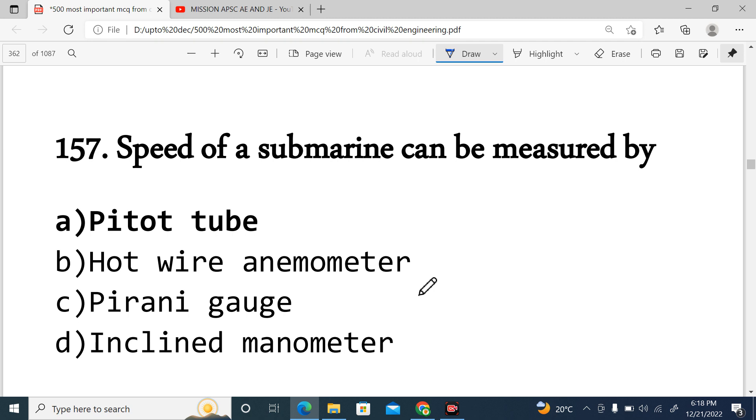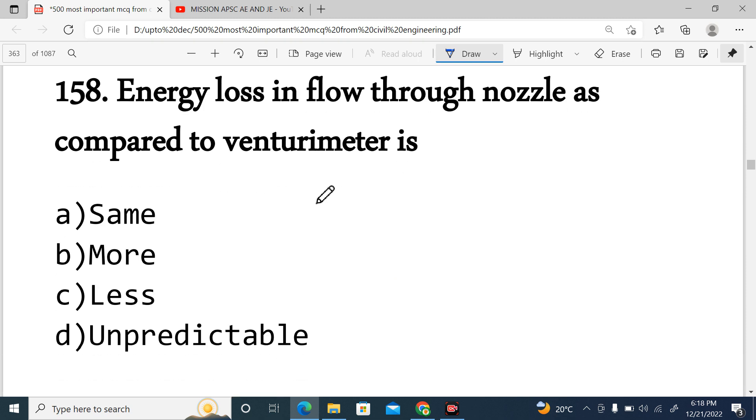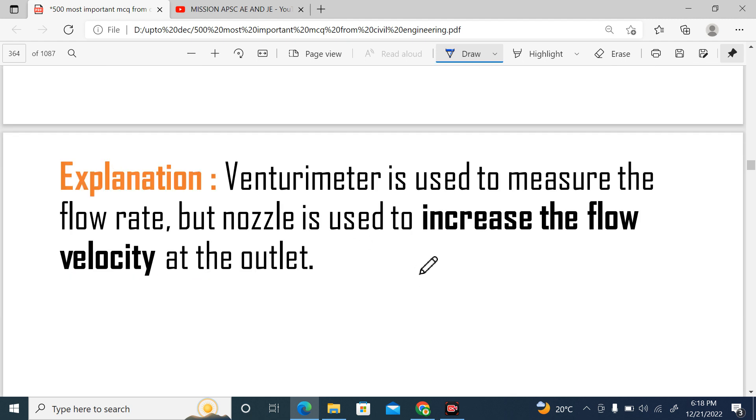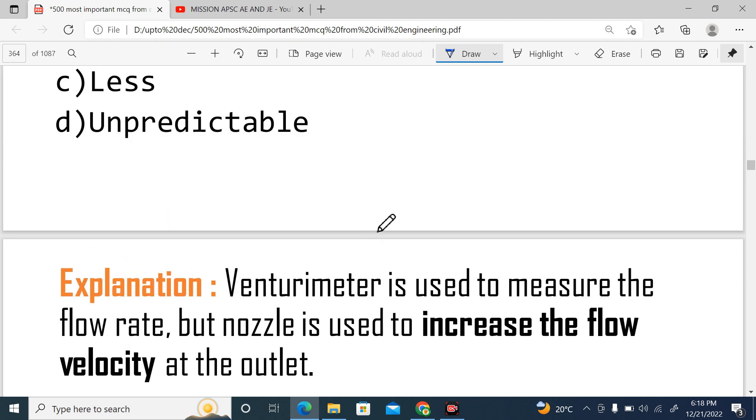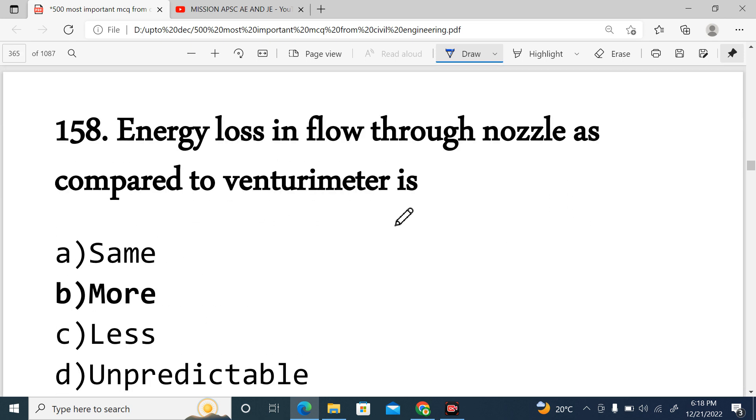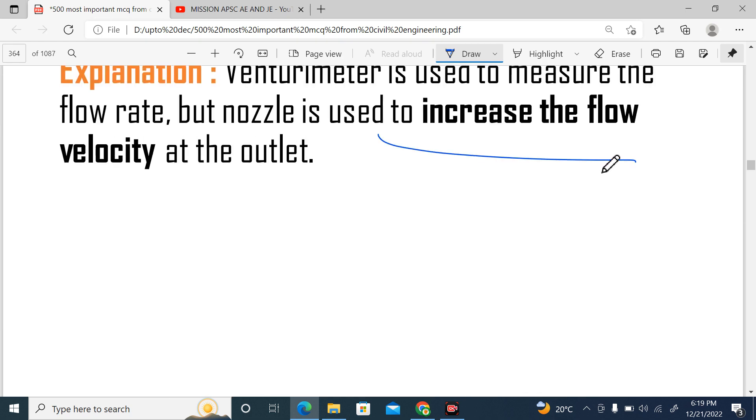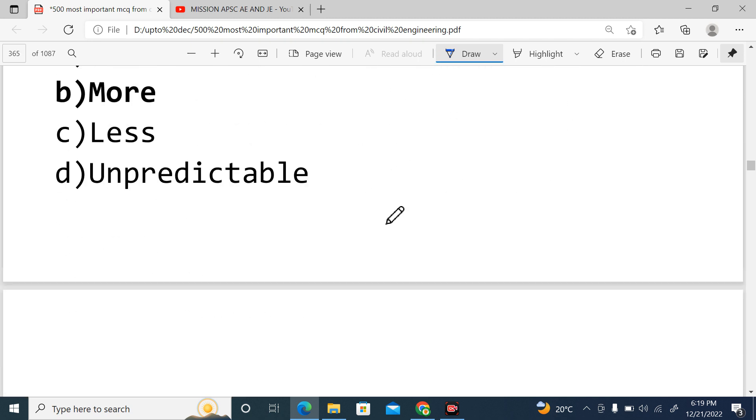Next, Question 157: Pitot tube, hot wire anemometer, free running, or inclined manometer - which is used to measure the speed of a submarine? Pitot tube is the device which is used to measure the speed relative to the water. They are used on both surface ships and submarines. The answer will be Pitot tube.